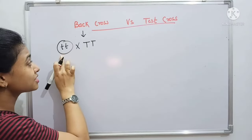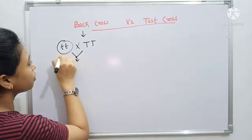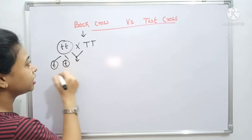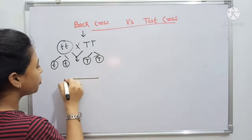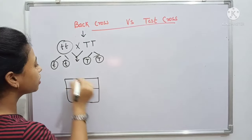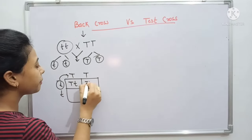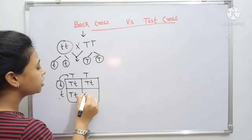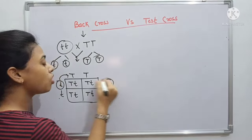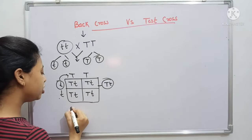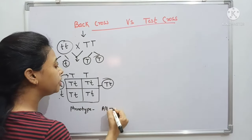So we cross homozygous recessive with homozygous dominant. If I cross them, the gametes will be small t, small t and capital T, capital T. If I put it in a Punnett square, all offspring will be capital T, small t — heterozygous. But if I look at the phenotype, all plants will be tall.